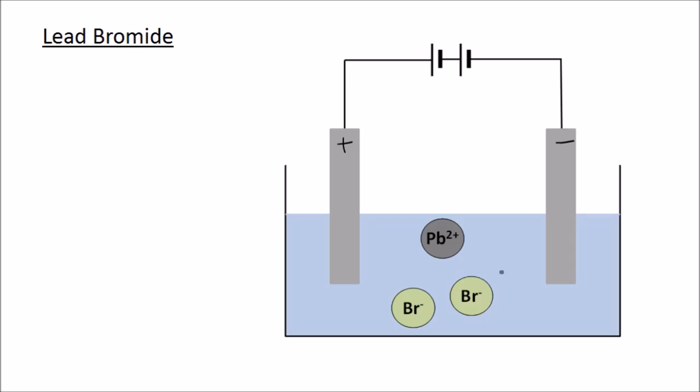You can see here the ions that molten lead bromide is made of - the lead ion and the bromide ions. When we turn on the current, the positive lead ions flow towards the cathode, and the negative bromide ions flow towards the anode.